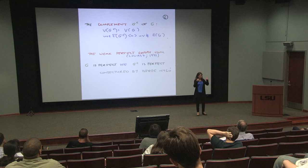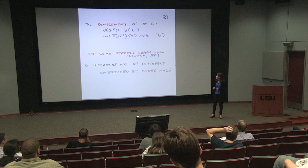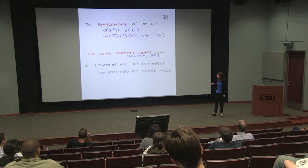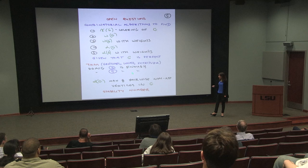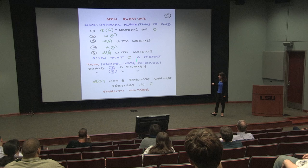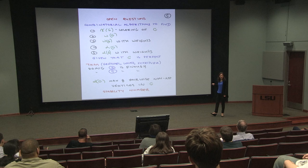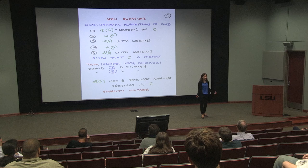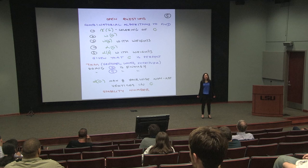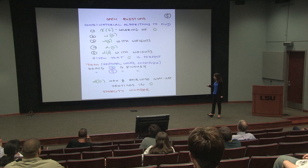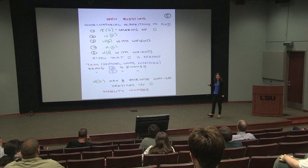A complement of a graph is obtained by changing all adjacencies: if two vertices were adjacent, make them non-adjacent, and vice versa. It's a theorem — conjectured by Berge and proved by Lovász — that a graph is perfect if and only if its complement is perfect. Finding a max-weighted clique is the same as finding a max-weighted stable set in the complement. So if you have an algorithm for all perfect graphs to find the heaviest clique, you also have an algorithm to find the heaviest stable set.